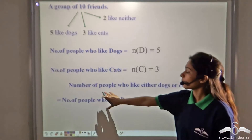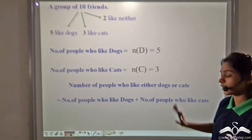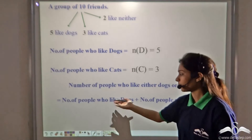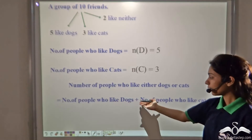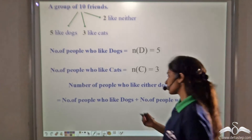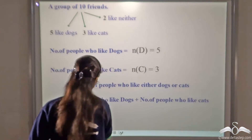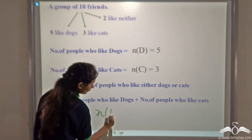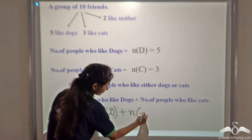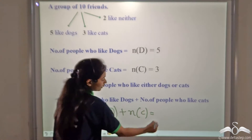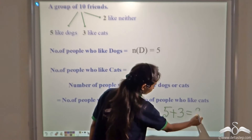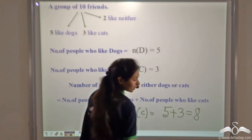The number of people who like either dogs or cats is the number who like dogs plus the number who like cats. So we add the cardinal number of D and the cardinal number of C: five plus three, which is eight.